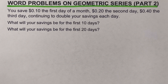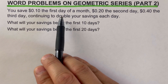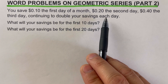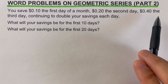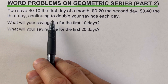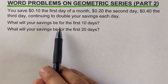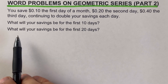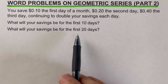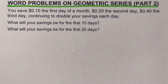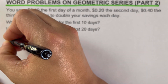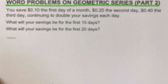Okay, so let's go over the problem. You save 10 cents for the first day of a month, 20 cents the second day, 40 cents the third day, continuing to double your savings each day. What will your savings be for the first 10 days, and what will your savings be for the first 20 days?